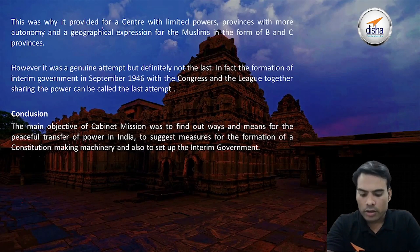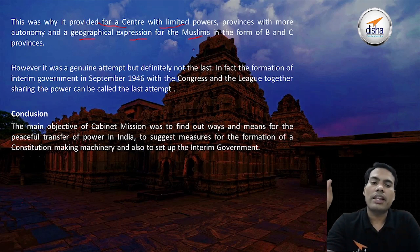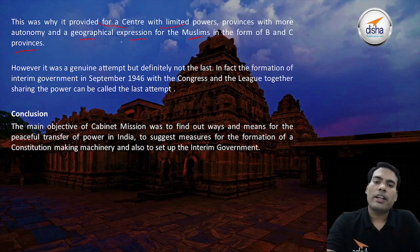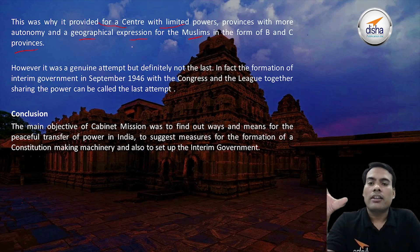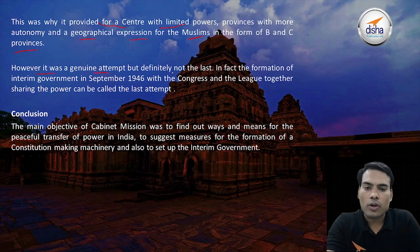This was why the Cabinet Mission Plan provided for a center with limited power, provinces with more autonomy, and geographical expression for Muslims in the form of B and C provinces. There was a plan for minorities to eradicate the dissension between Hindus and Muslims. It was a genuine attempt, but definitely not the last.